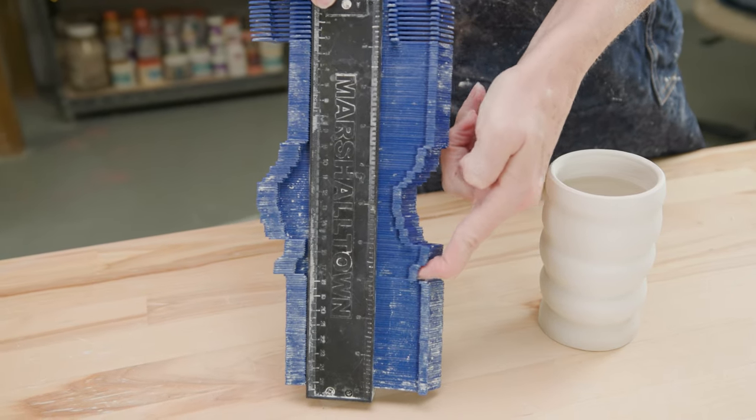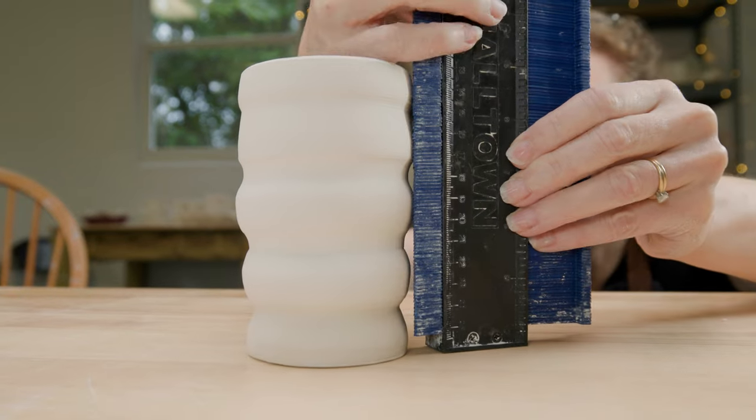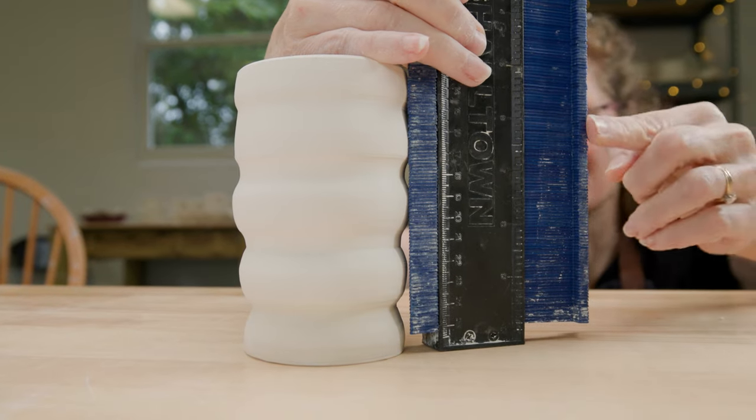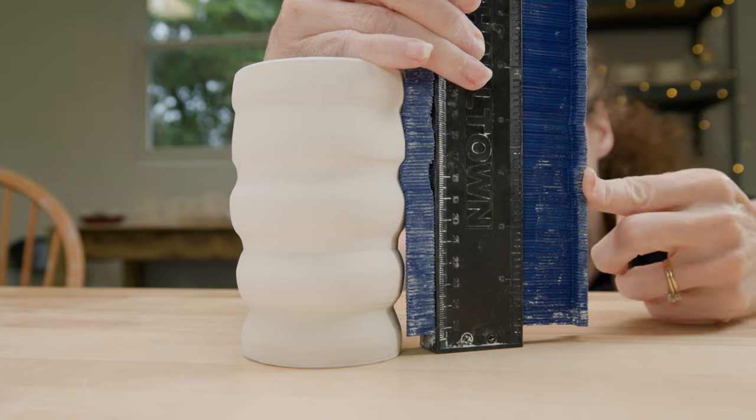I found this one at the hardware store for about 10 bucks. I just placed it flat on the table up against the side of the cup. I began to push the teeth tight to the curves and along the top.